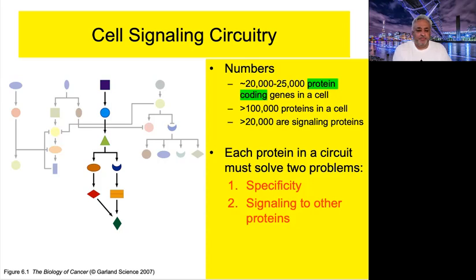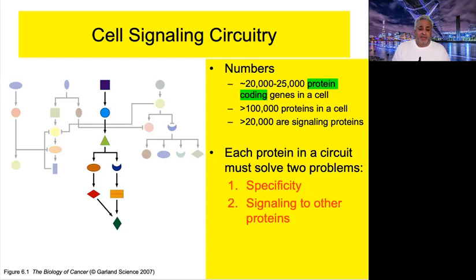The take-home message so far: many cancer cells have imbalances in these signaling pathways. When we compare normal cells to a multitude of cancers, we generally find perturbances in either the quantity or the relationships between these pathways compared to normal. This provides a great clue as to how cancer cells may manifest their mutations.